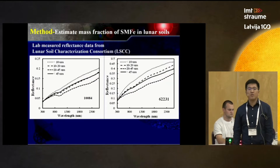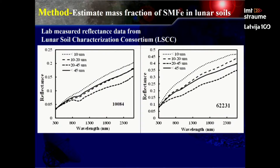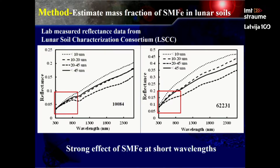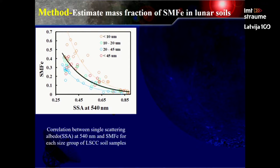The key to testing whether the solar wind deflection model is correct is to develop a model that can estimate the mass fraction of sub-microscopic iron in lunar soils. To do this, we first checked lab-measured reflectance data from the Lunar Soil Characterization Consortium. These figures show the reflectance of two soil samples of different particle size and composition. We can see that both samples show convergent reflectance at short wavelengths, which may be related to the strong effect of sub-microscopic iron in this wavelength region, which is not strongly affected by soil composition.